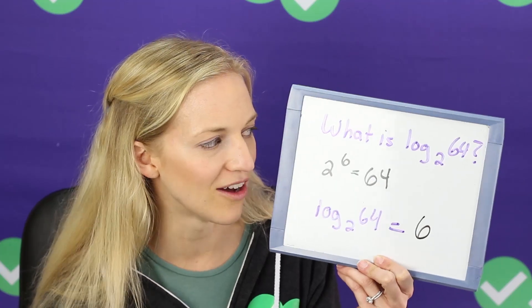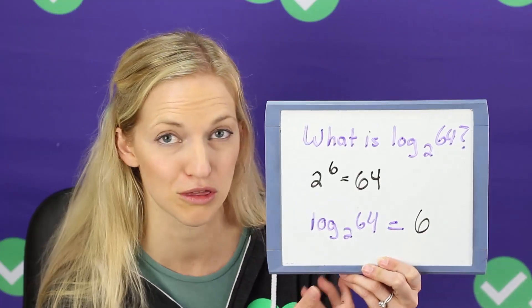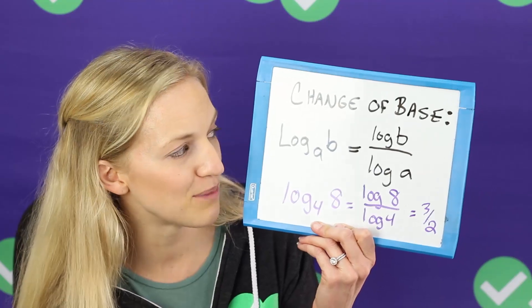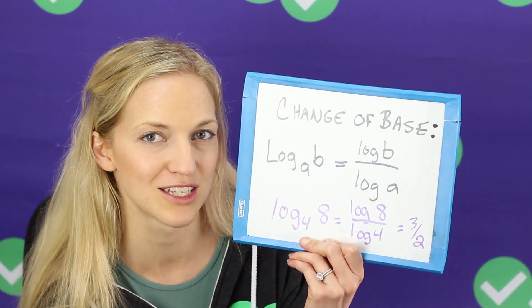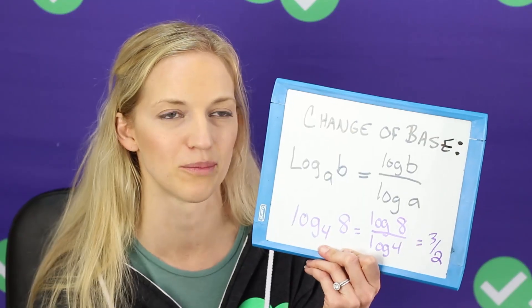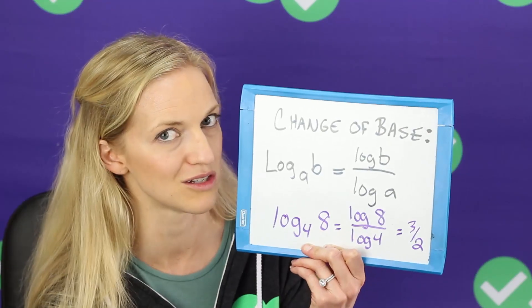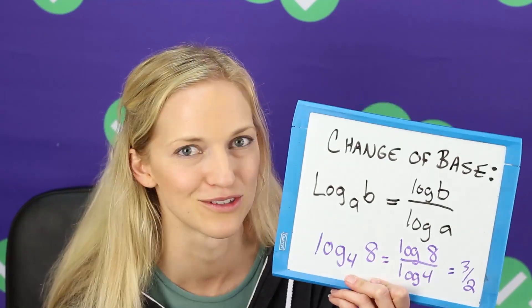It does get a little bit more complicated on the test than that, with some adding and subtracting of logs. But this is the basics that's going to help get you through. Plus one more really important trick for a test in which you're allowed to use your calculator — and that is the change of base rule. The change of base rule allows us to convert logs to a base of 10, which is what your calculator uses. If you have a scientific or graphing calculator, you have a log button, but it only works if the base is 10. This is what the change of base rule allows you to do — convert it into that form.